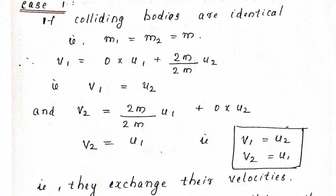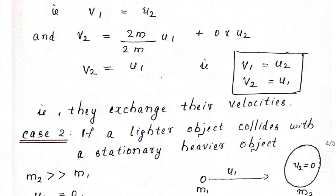Case 1: if the colliding bodies are identical. Identical means they are alike in all aspects — their mass, shape, size, everything. For such bodies they have the same masses, so we can take m1 equal to m2 equal to m. Substituting in the expressions for v1 and v2, we have a term m1 minus m2 which becomes 0, so v1 equals u2. Similarly v2 equals u1.